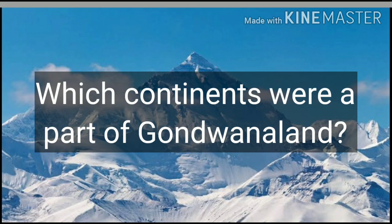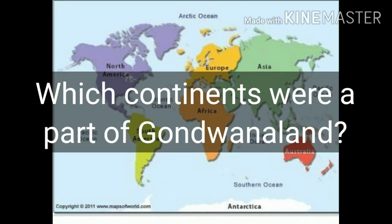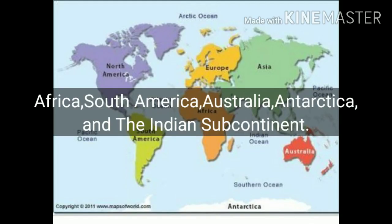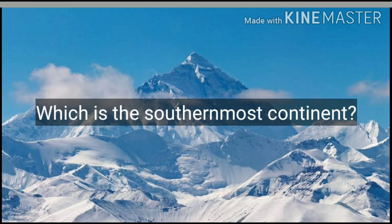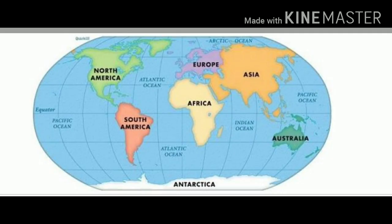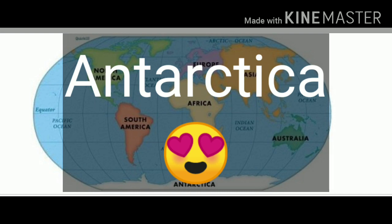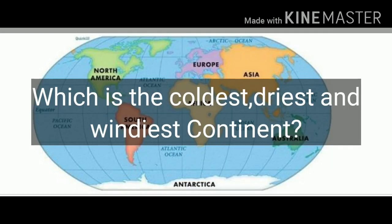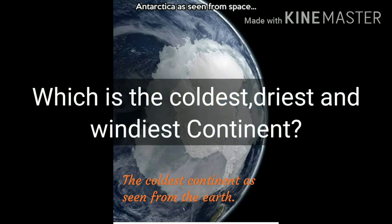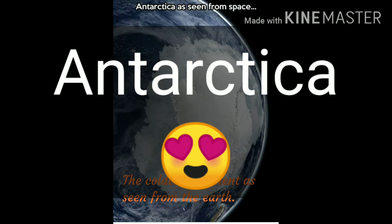Which continents were a part of Gondwana Land? Africa, South America, Australia, Antarctica, and the Indian subcontinent. Which is the southernmost continent? Antarctica. Which is the coldest, driest, and windiest continent? Again, it is Antarctica.